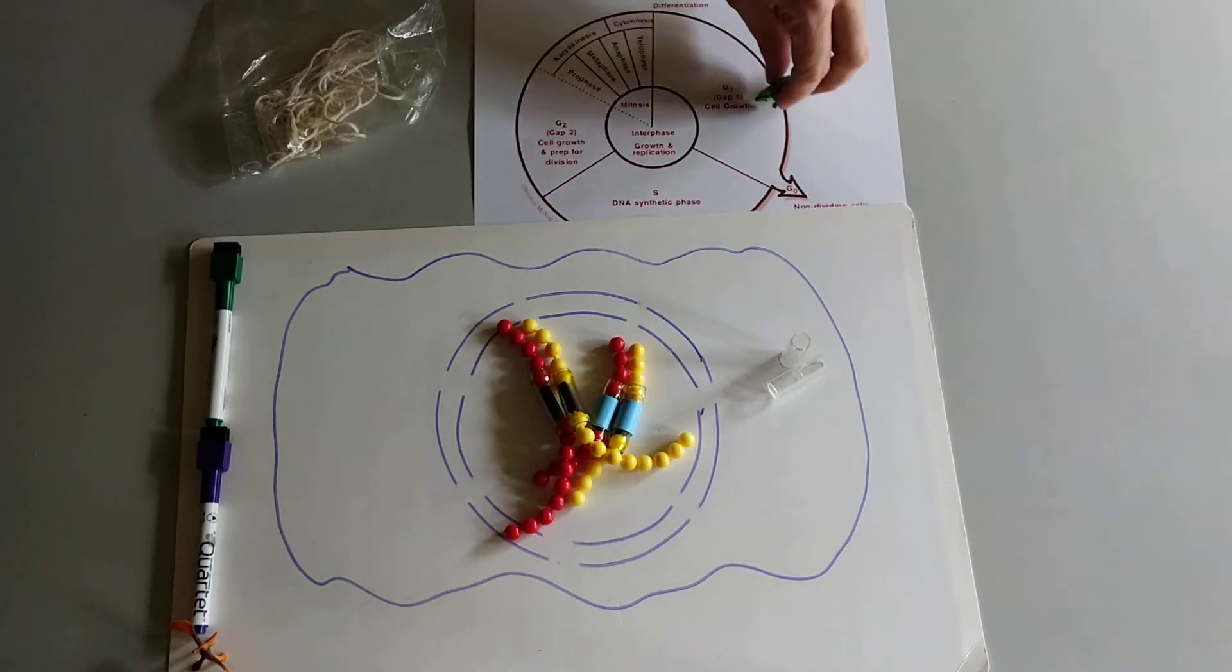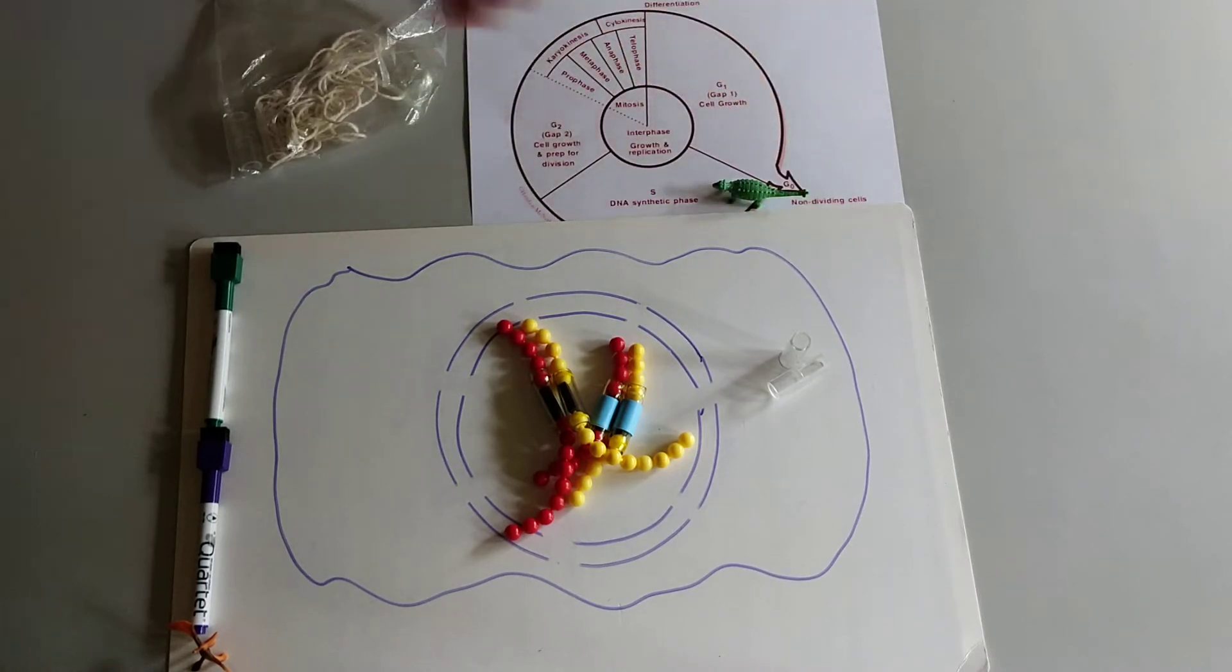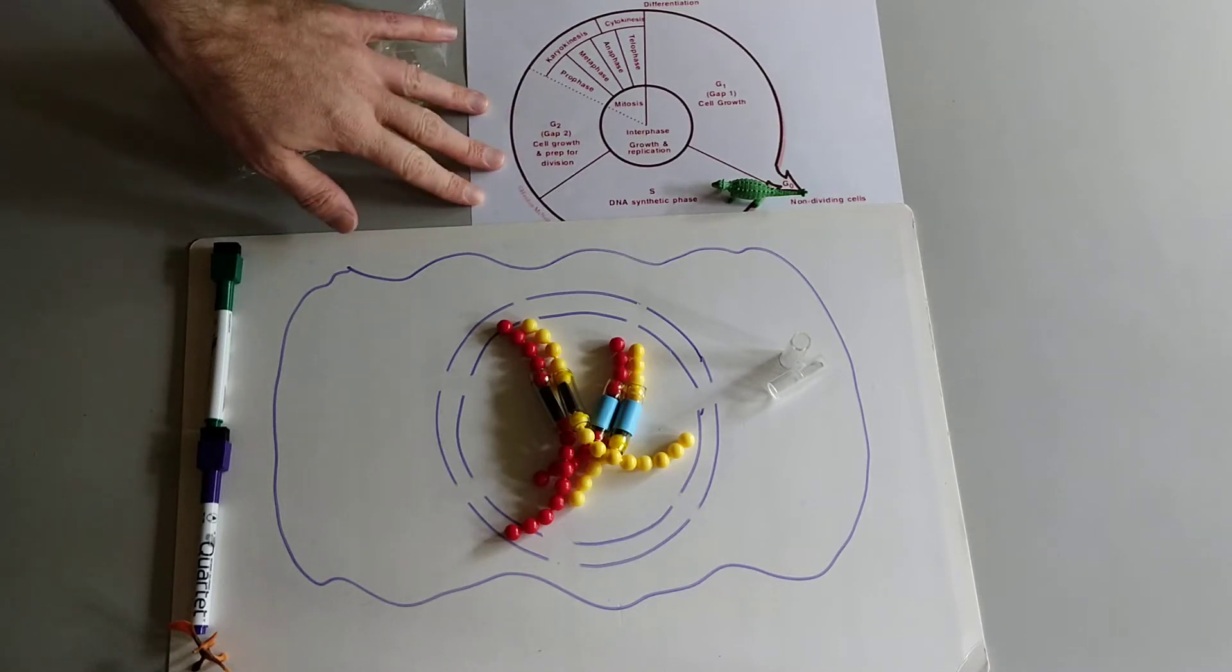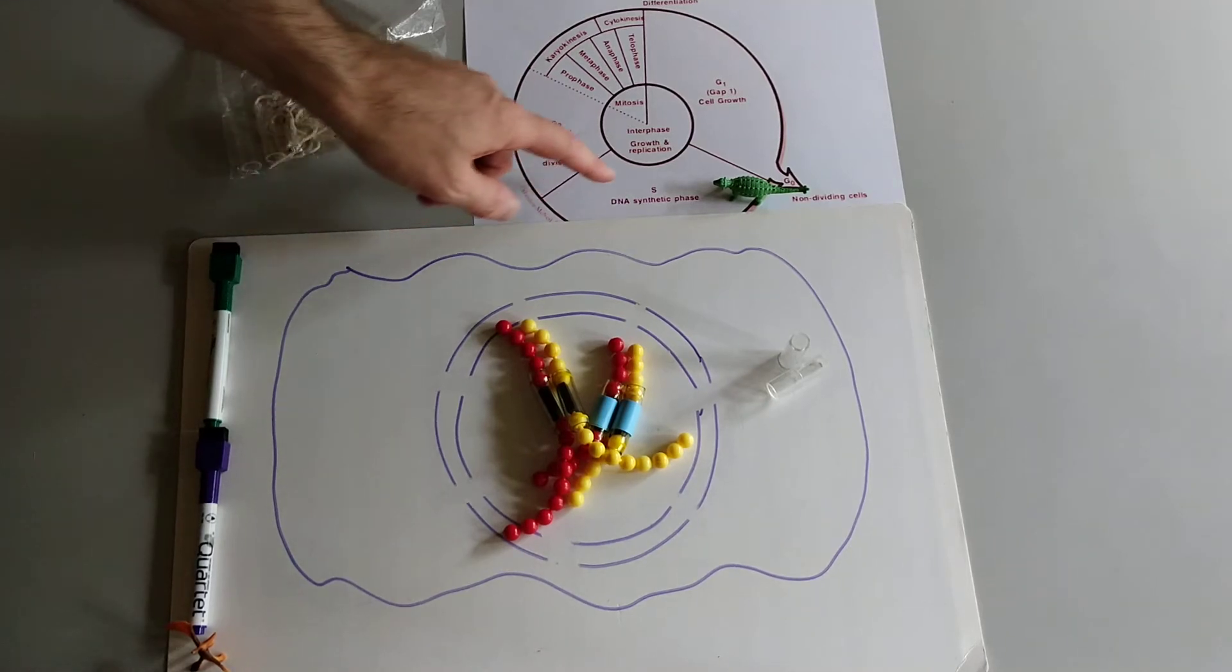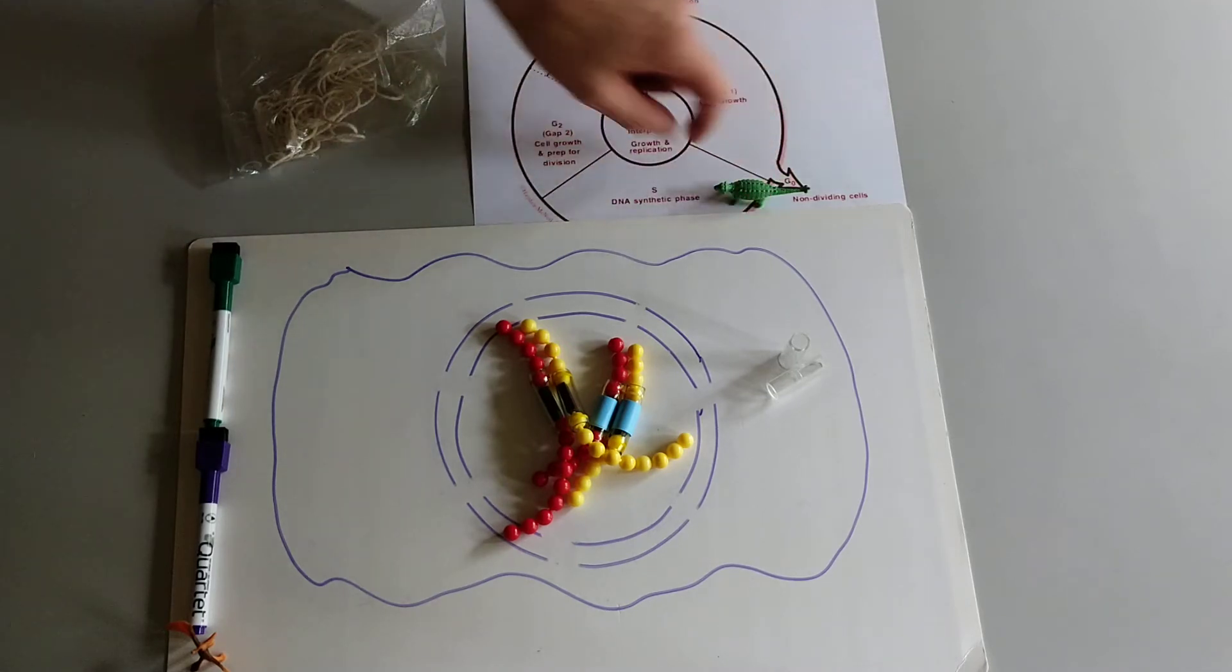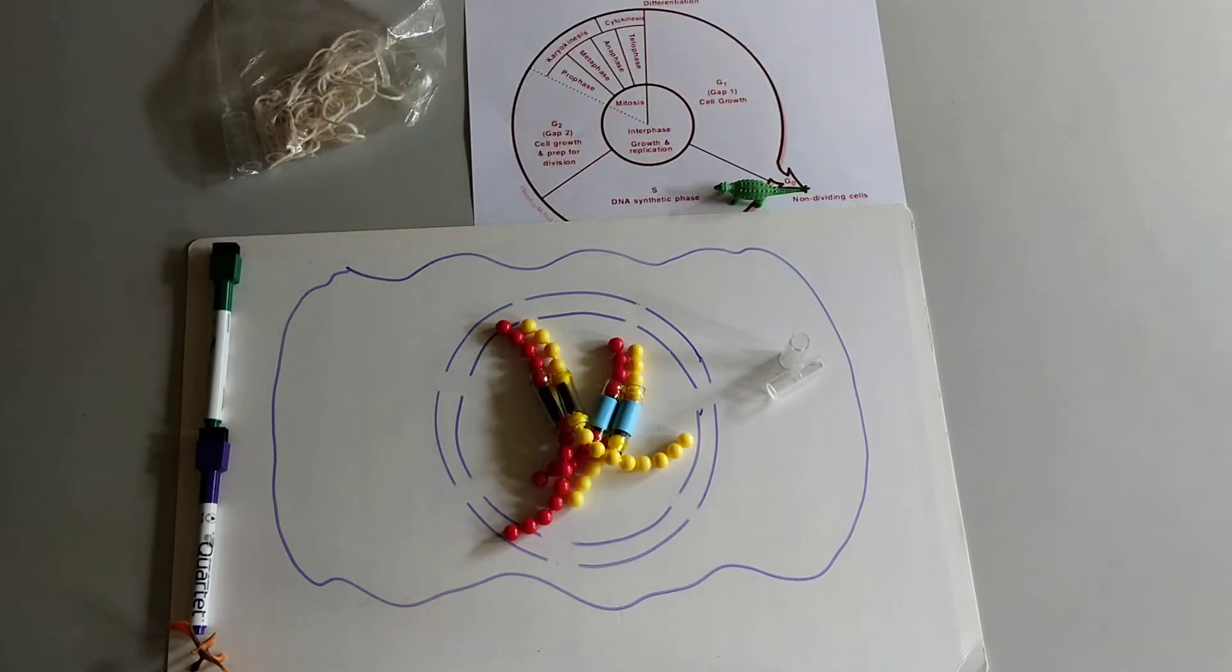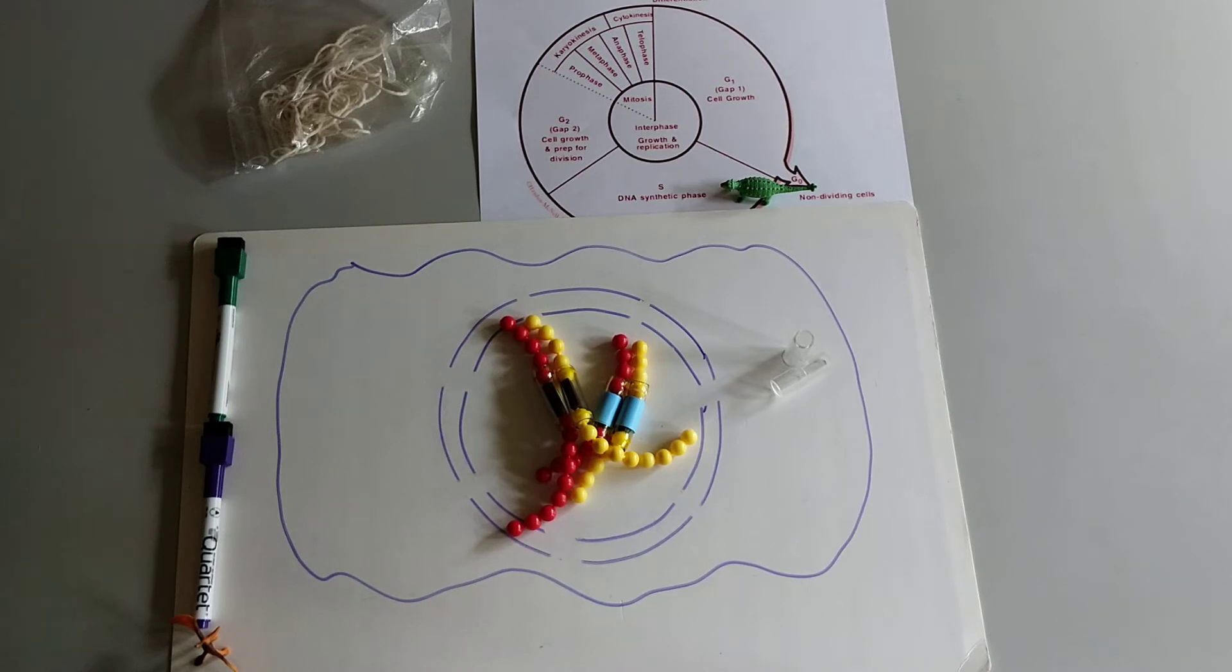So as the cell maybe gets a signal or grows enough that it decides it's going to start replicating, the first thing it needs to do is to replicate the DNA. And this happens in interphase. This happens in the S stage of interphase. So we have our little clock here of the cell cycle which is the same as figure one in your book.